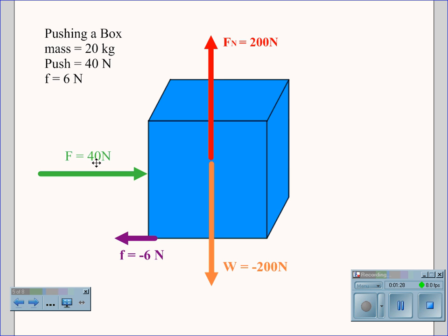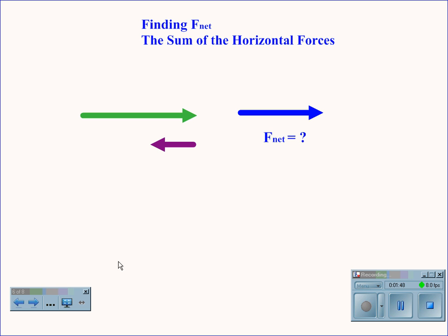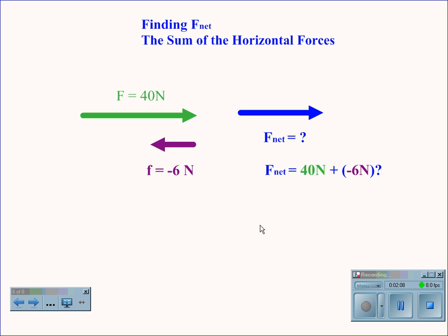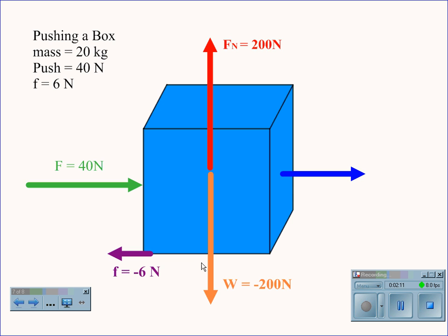This makes for 40 newtons in the positive direction and negative 6 newtons in the opposite direction, because friction acts opposite of the push. We would next find the net force. Net force is the force that's actually going to push the box. To find net force, you take the sum of all horizontal forces. So we have a 40-newton push force and a friction force of negative 6 newtons, which means net force equals 40 newtons plus negative 6 newtons, giving us a net force of 34 newtons.